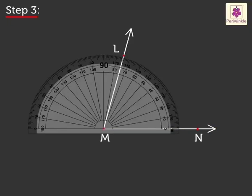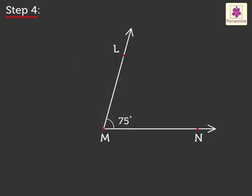Step 3: Read the degree measure that coincides with ray ML. Ray ML coincides with 75 degrees. Step 4: Write the measure of angle which is equal to 75 degrees.